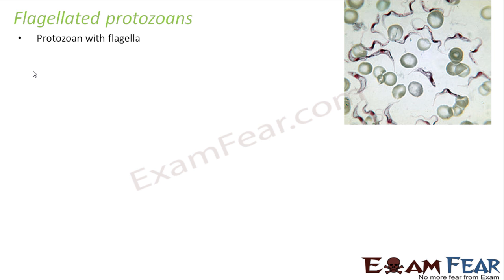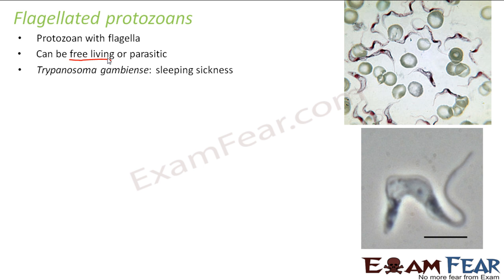Now let us talk about flagellated protozoa — protozoa with flagella. Flagella is a single whip-like structure. They can be free-living or parasitic. Free-living means they are heterotrophic and depend on others for food but do not live inside another organism's body. An example is Trypanosoma gambiense, which causes the disease sleeping sickness. This protozoa is parasitic — it lives inside the human body, obtains nutrition from it, and causes sleeping sickness.